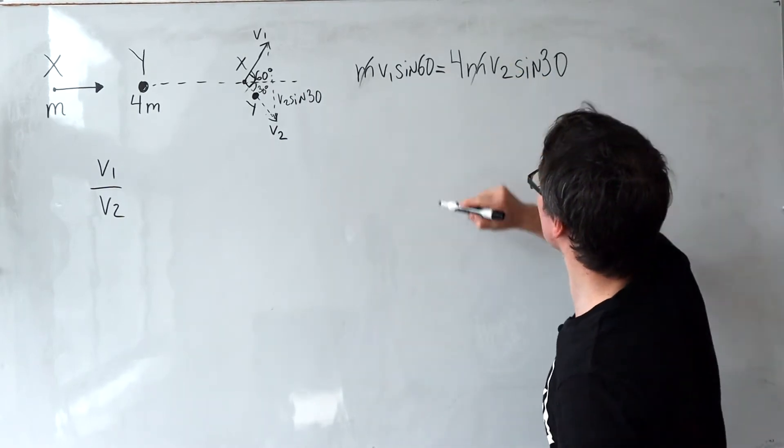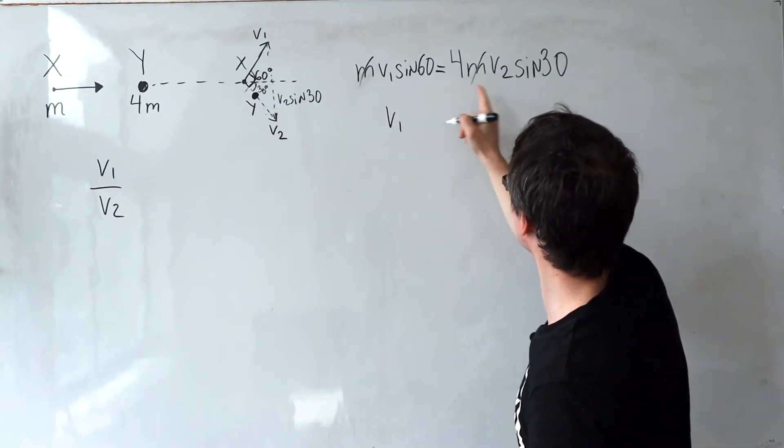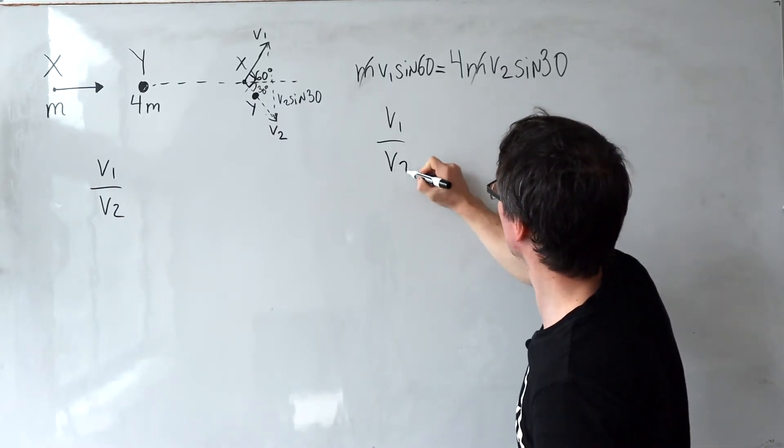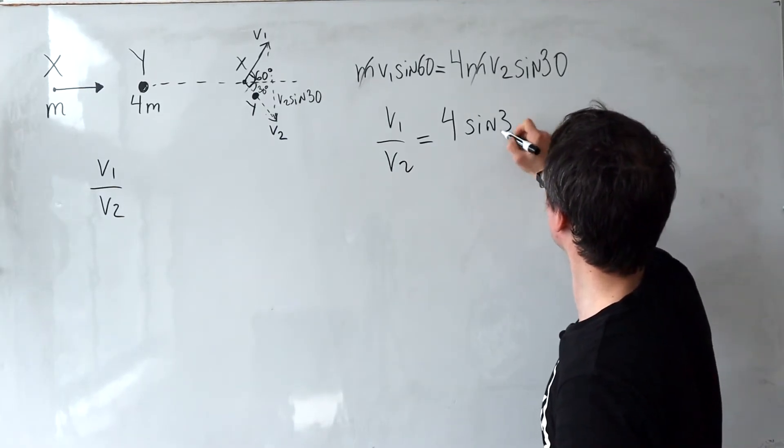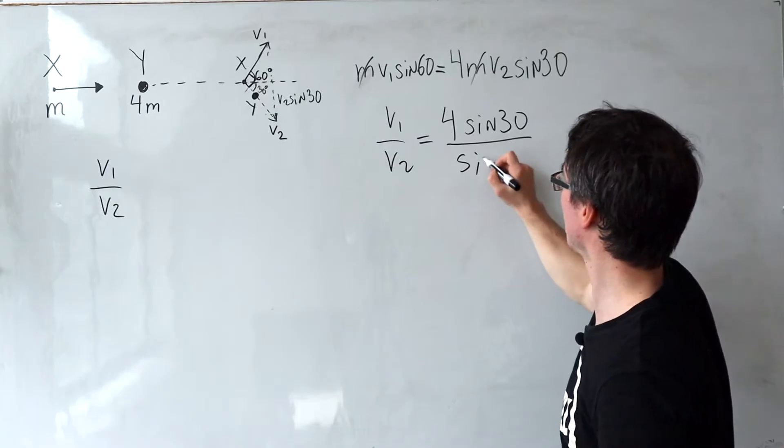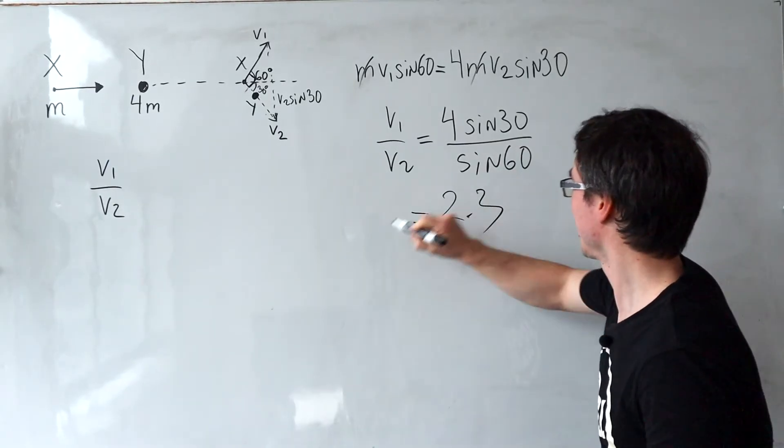Notice that the masses are now going to cancel, and what we're left with is, let's just rearrange for V1 over V2, which will be 4 sine of 30, divide that by sine of 60, giving us around 2.3.